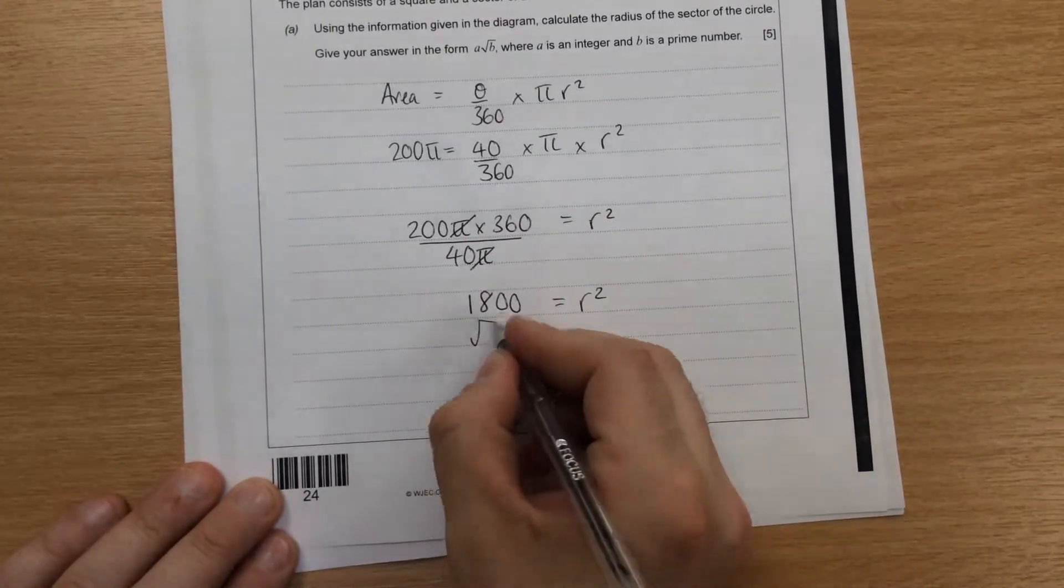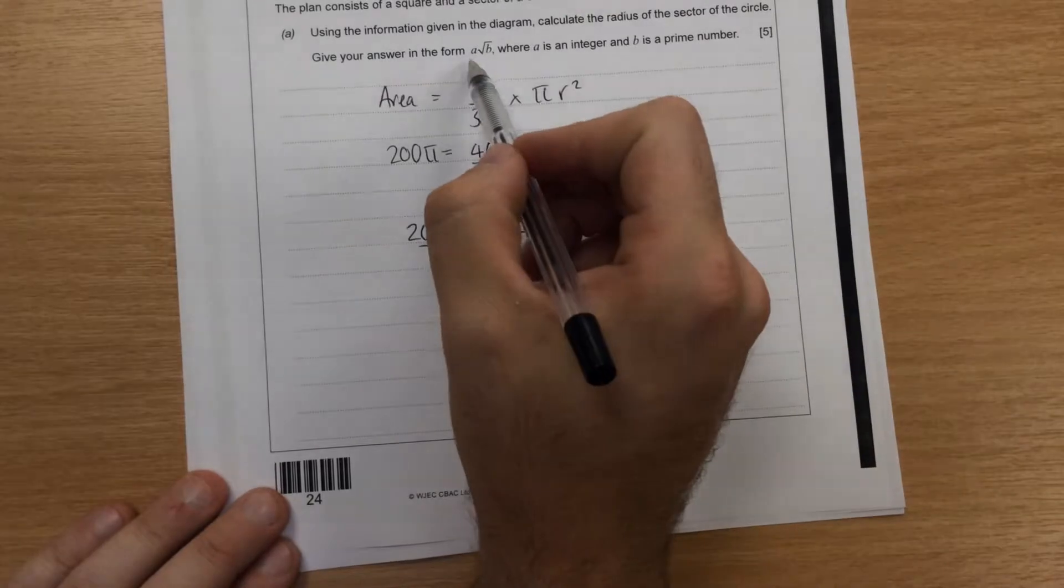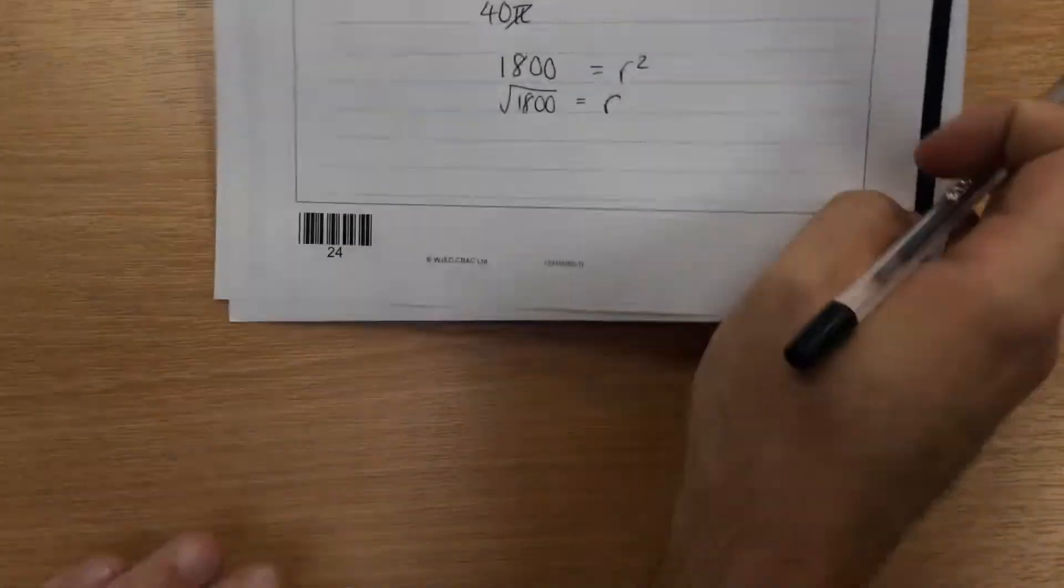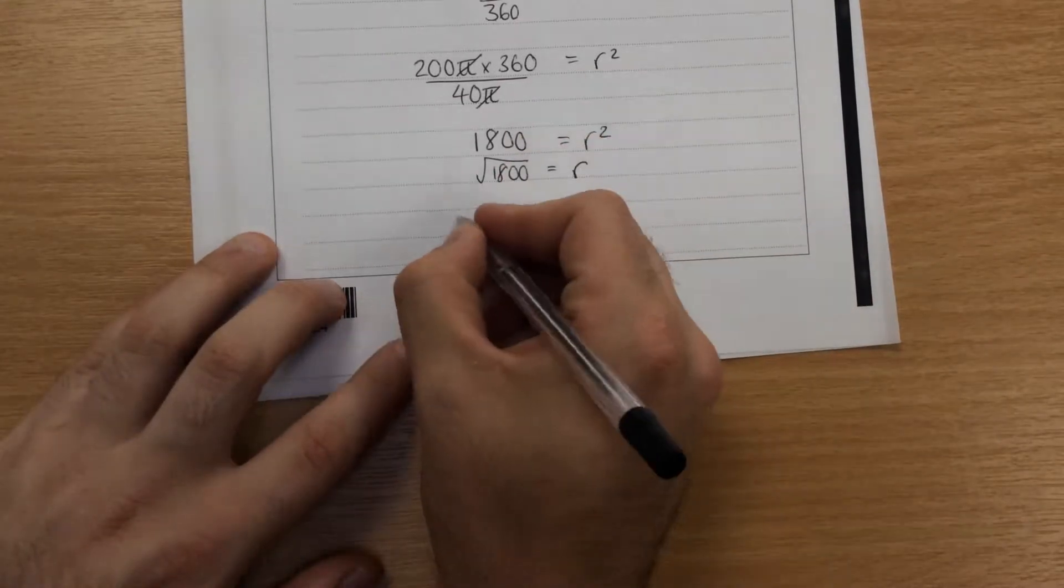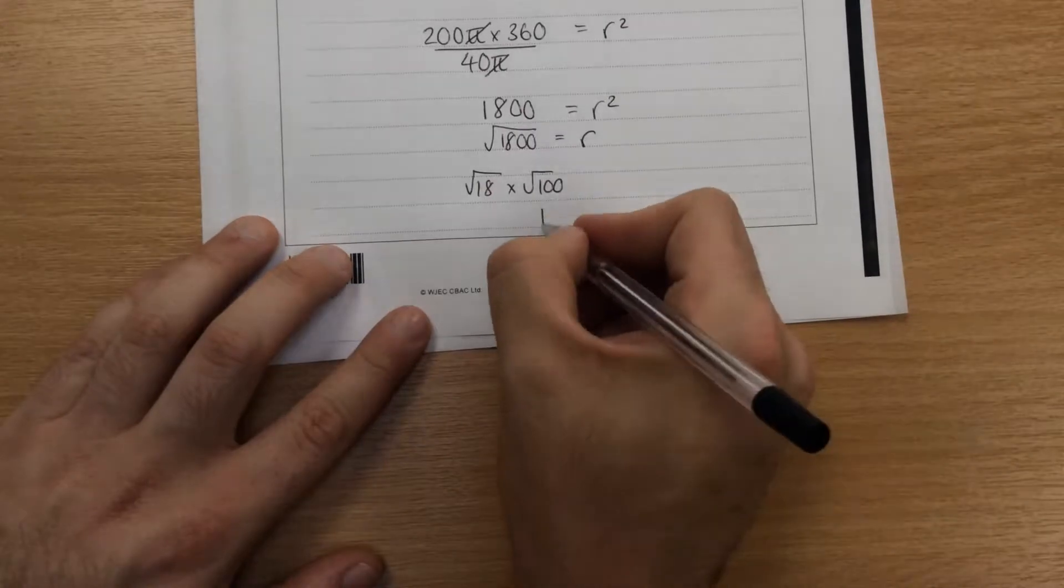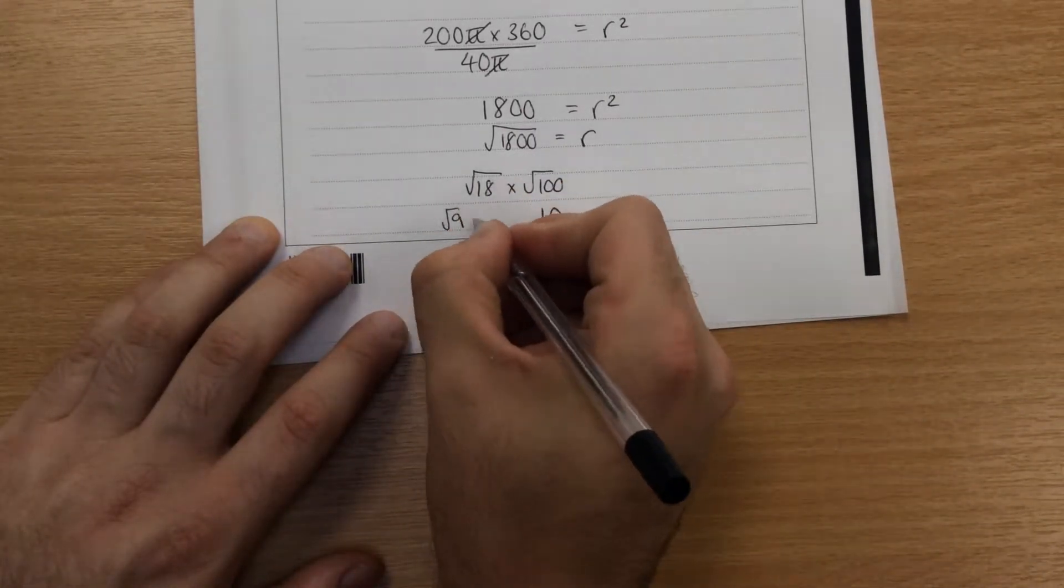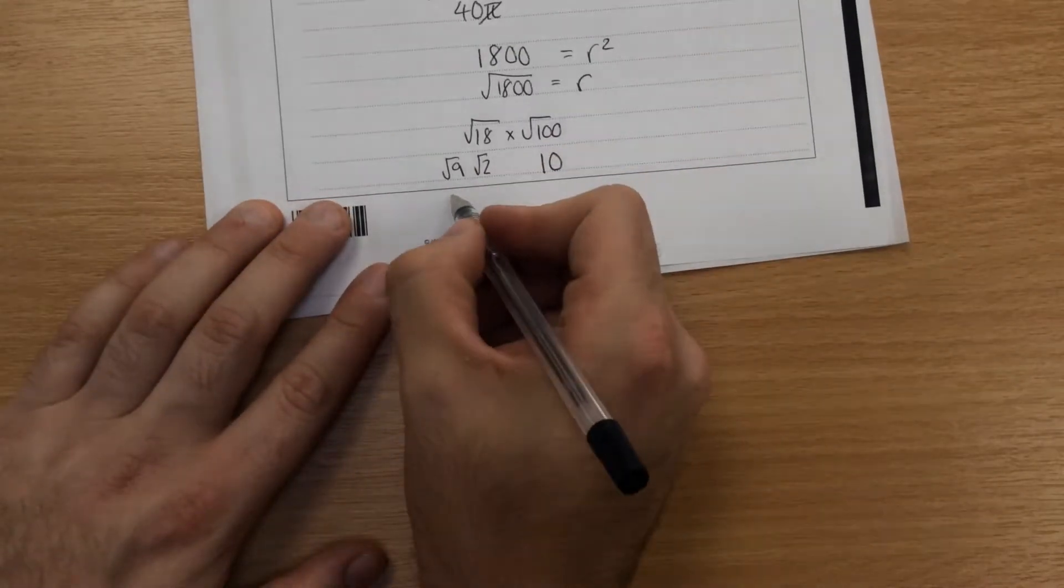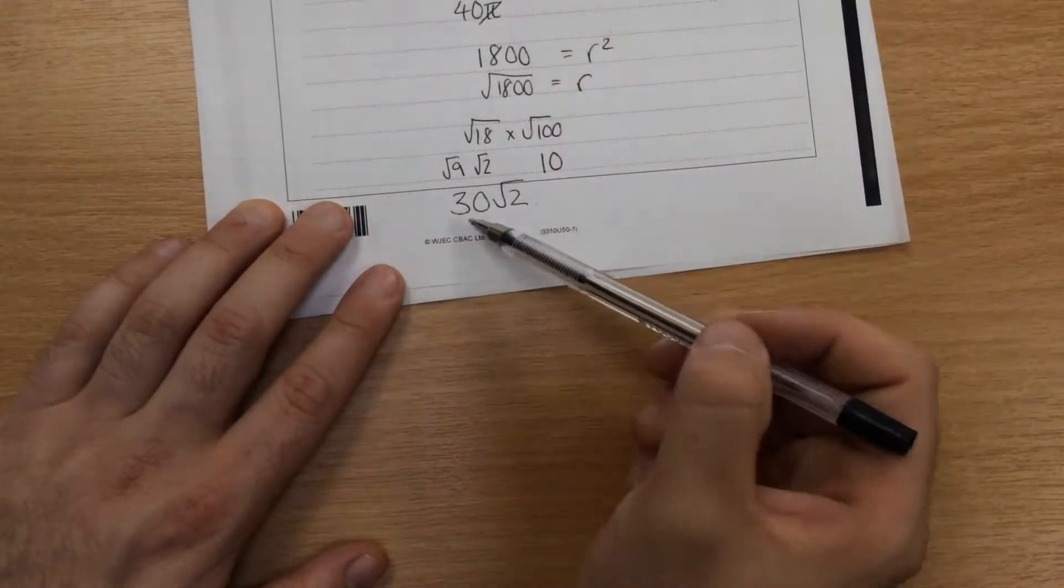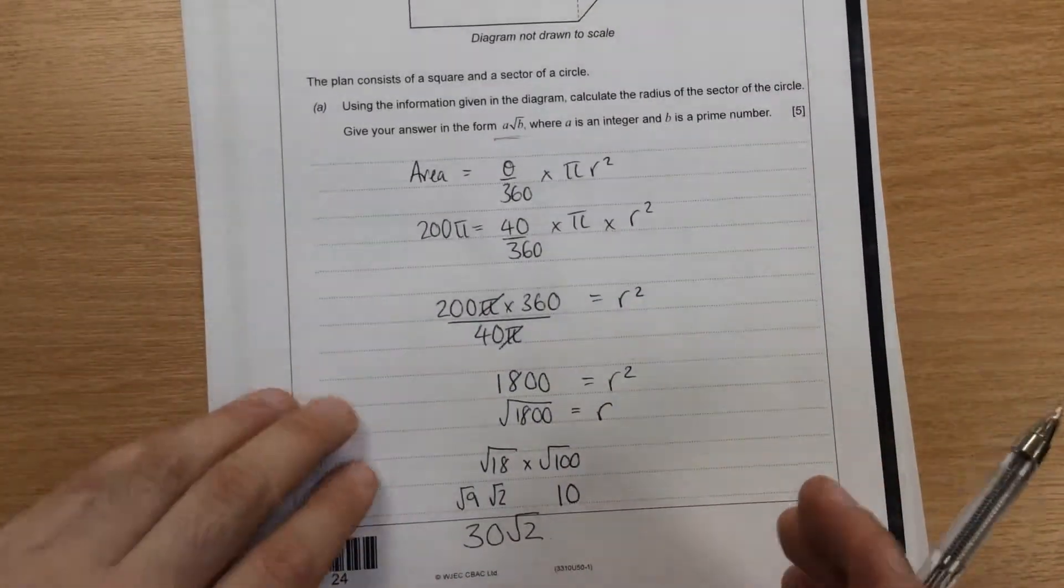So then we can square root 1,800 to find r. Now it asks for it in the form of a root b. So we're going to have to use our rules for splitting up surds to find that. I'm going to split this into 18 times by 100 because I know that the square root of 100 is 10. And then I'm going to change root 18 into root 9 root 2. And then I know that that's 3. So this becomes 30 root 2. So a is an integer, 30, and b is a prime number, and 2 is a prime number.